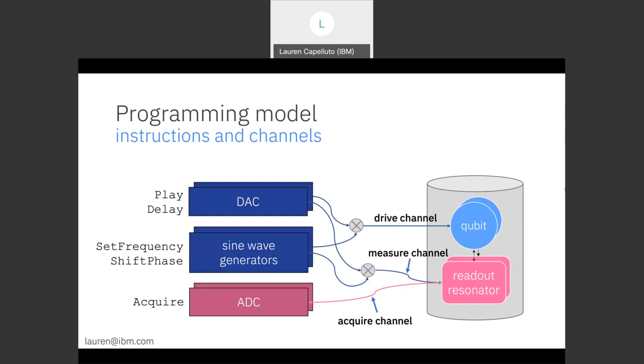Every qubit will have a measure channel which is going to stimulate readout for that qubit. It goes down to the readout resonator and then we have an acquire channel to collect the data. That acquire channel goes to an analog to digital converter which is in turn triggered by the acquire command.